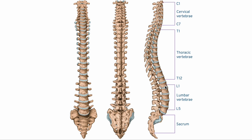Starting at the lower back, we have an inward curve called the lumbar section of the spine. Then you've got an outward curve around predominantly where the rib cage is, called the thoracic vertebra. And then you have a slight straightening and maybe a slight inward curve again for the cervical vertebra, which are the ones in the neck.